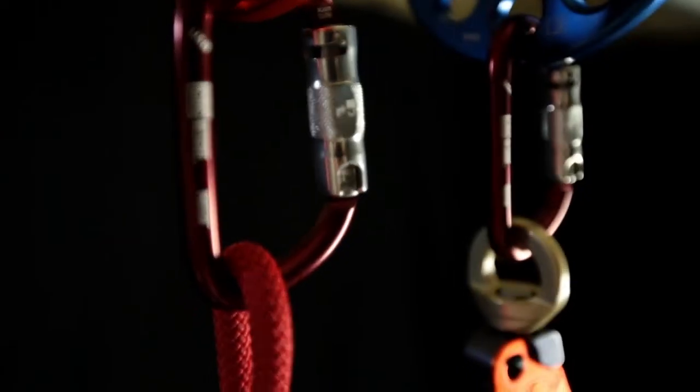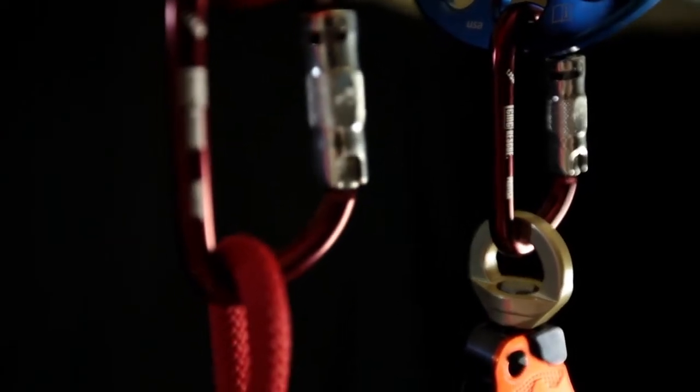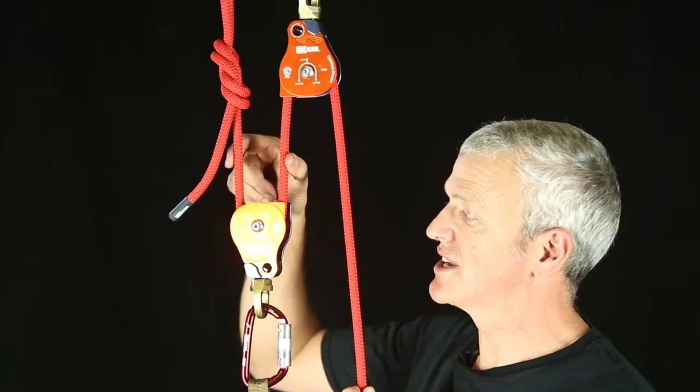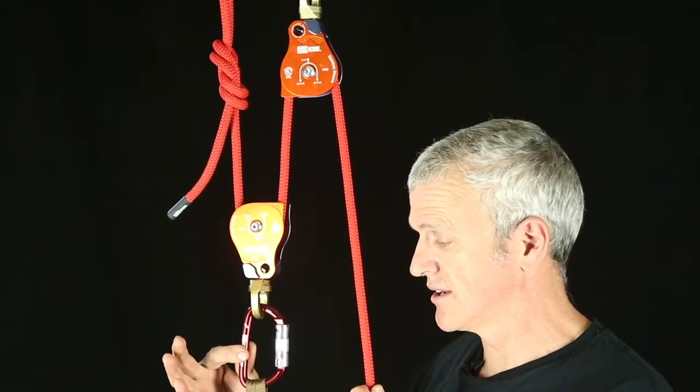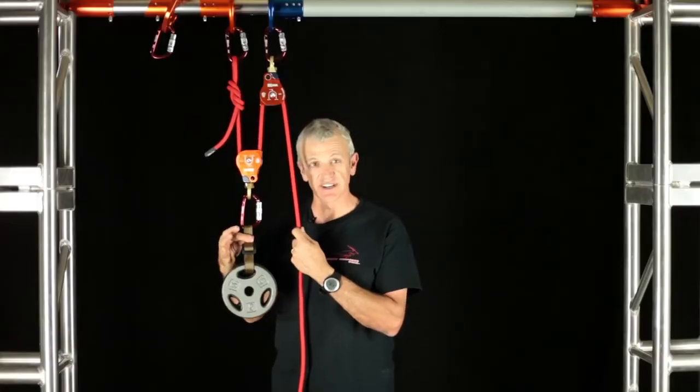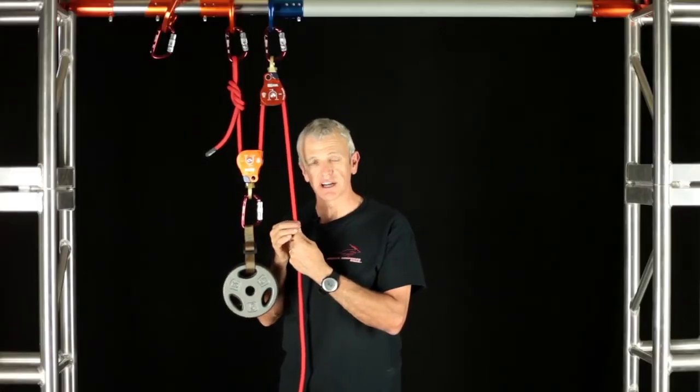There's two units of tension being applied to that top anchor. One unit of tension, one unit of tension here being opposed by two units of tension at this carabiner, which means two units of tension here for every one unit that I'm applying at the input.